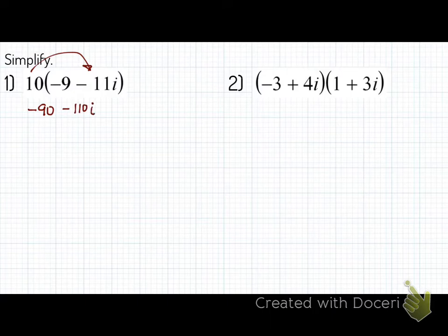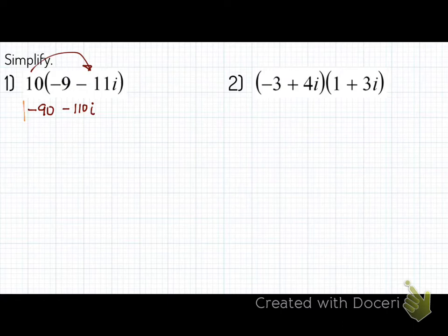So I'm going to multiply. 10 times negative 9 is negative 90. 10 times negative 11i is negative 110i. Now, can I combine like terms here? No. This is a constant — that's our real number — and then negative 110i is an imaginary number. I can't simplify that; it's i to the first. So we are done. The answer is negative 90 minus 110i. That's your answer — that's number 1.